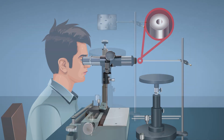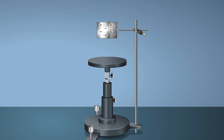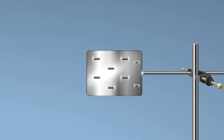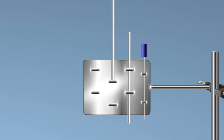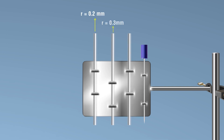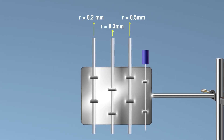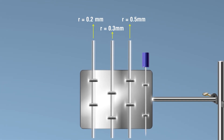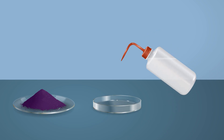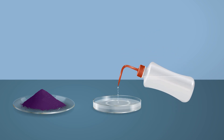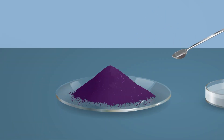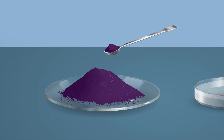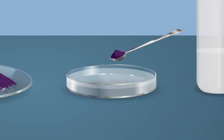Place the stand on the table. Fix capillary tubes together on the capillary tube clamp, placing them in increasing order of radius. Take a dish and fill half of it with water, then add granules of potassium permanganate for coloring.